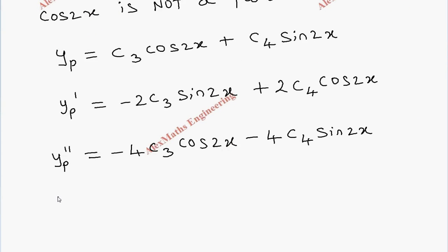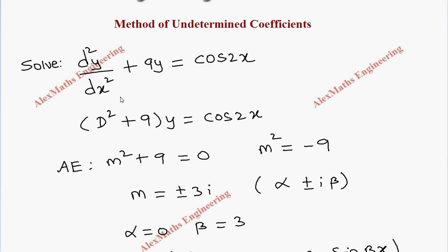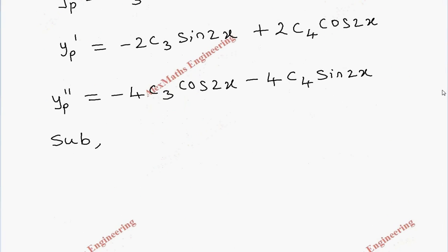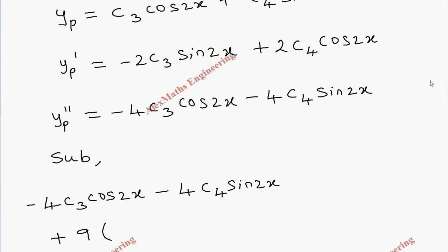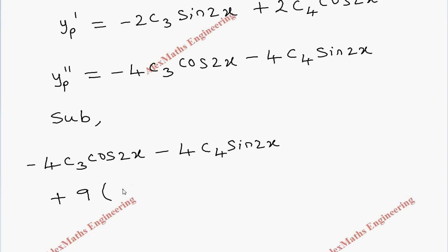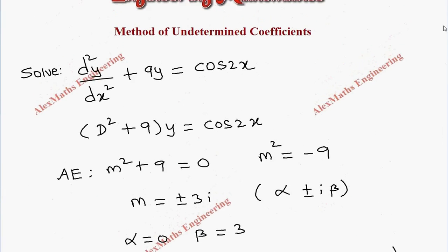Now let's substitute these in the question. In the question, the first term is the second derivative plus 9y. So minus 4c3 cos 2x minus 4c4 sin 2x plus 9 into c3 cos 2x plus c4 sin 2x. And on the other side, the term we have is cos 2x alone.